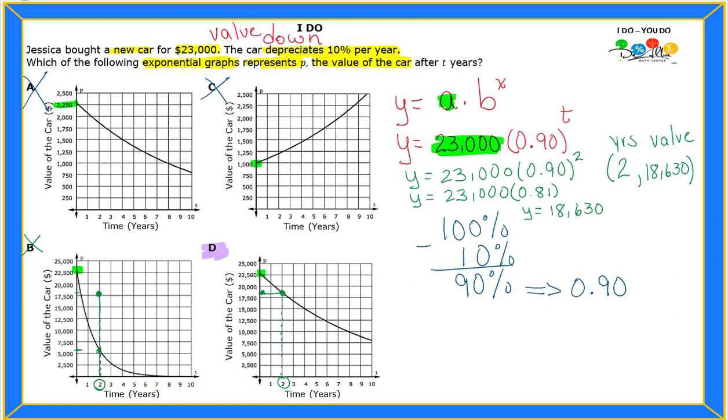So remember, if you're trying to match a problem, first write down the equation or function. You replace the starting value, which is A, and then B. Remember that this is a decay. Decay is when B is less than 1, but greater than 0. In this case, B is less than 1, because B is 0.90, which is less than 1. This is the way we can match our graph.